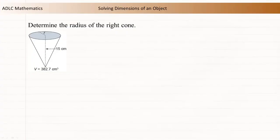Here is another example of determining an unknown dimension when given the volume and other dimensions of an object. This example asks you to determine the radius of a right cone. The cone has a volume of 382.7 centimeters cubed and a height of 15 centimeters.